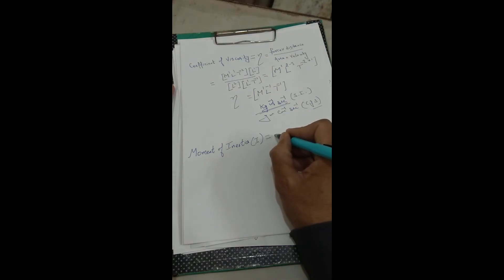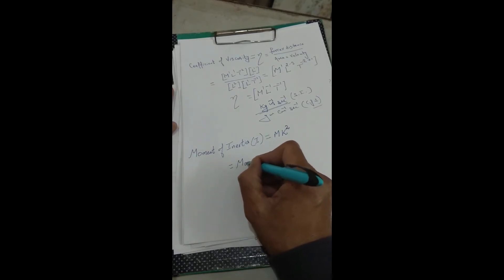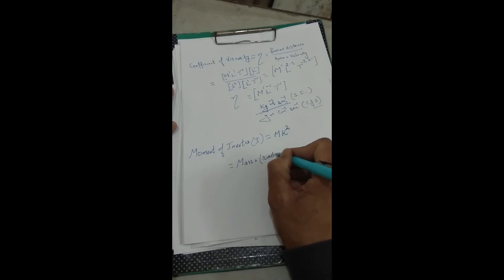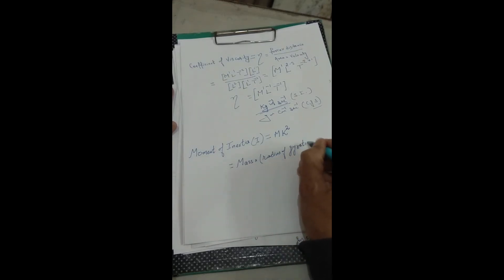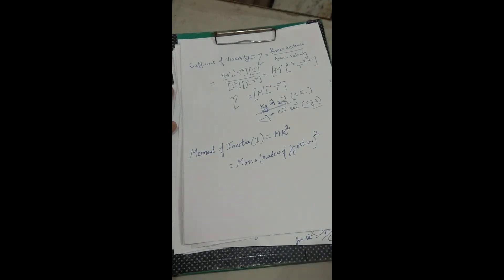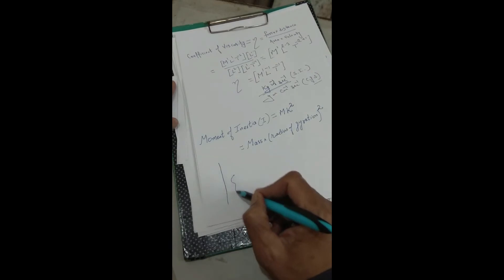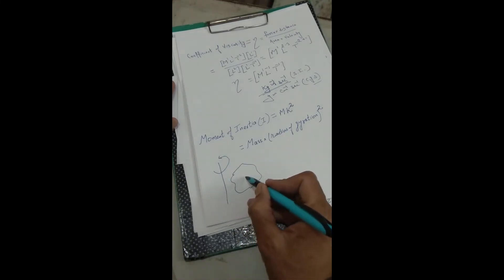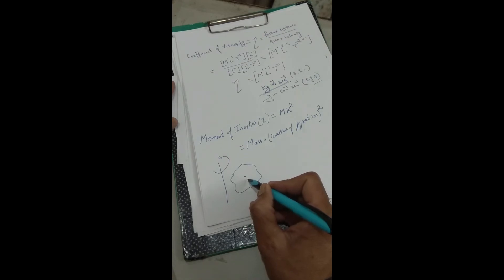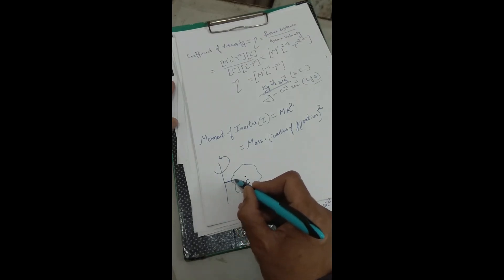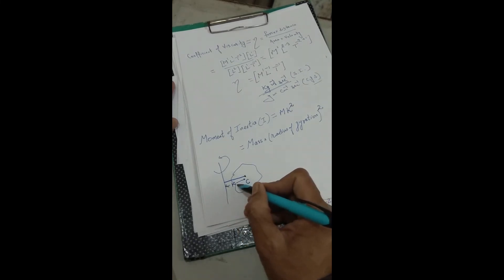Moment of inertia I = mass × (radius of gyration)². The radius of gyration k is the perpendicular distance from the axis of rotation to the center of mass. When a rigid body moves about an axis, there is a point where all the mass is considered concentrated — that is the center of mass. The perpendicular distance from the axis to this point is the radius of gyration k.